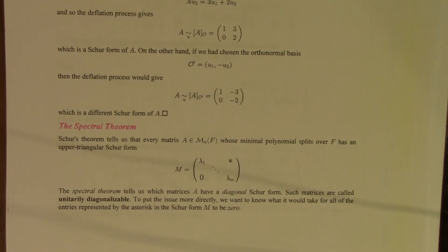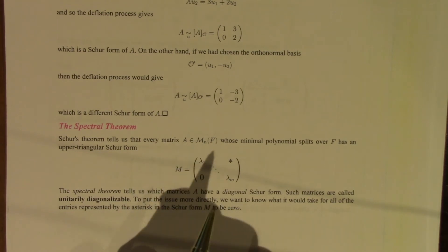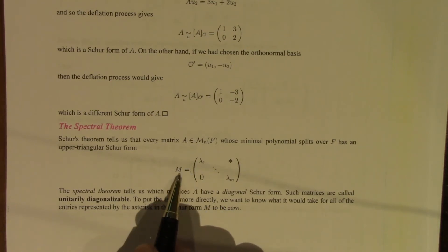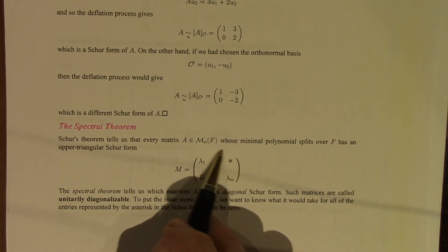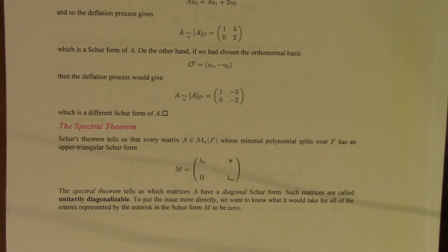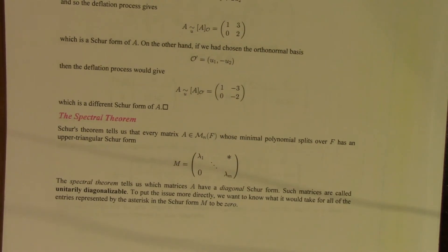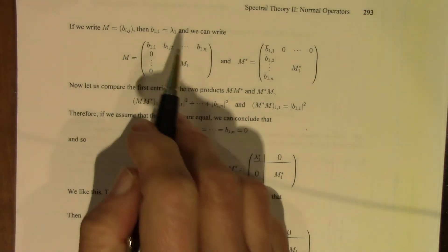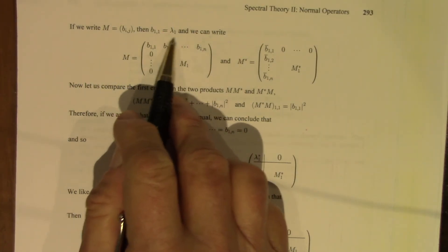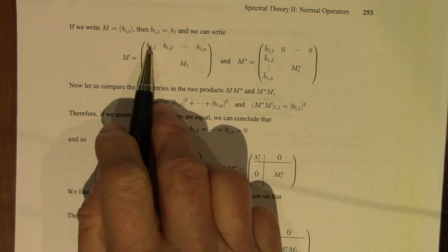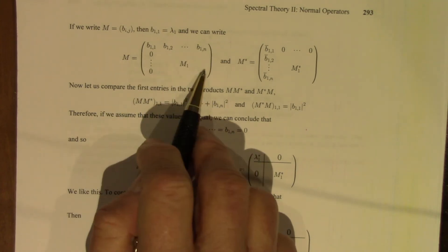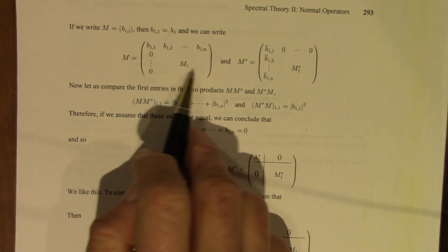To put the matter very directly, we start with the matrix A, we produce a Schur form for it — it's upper triangular. What we want to know is what would it take to guarantee that M is diagonal, that all of the entries above the main diagonal are zero. If we write the matrix M and denote its elements by B_ij, then the first upper-left entry is lambda_1. I've written out the first row; the entries after B_11 in the first column are all zeros because this is upper triangular, and M_1 is the remaining submatrix, which is also upper triangular.